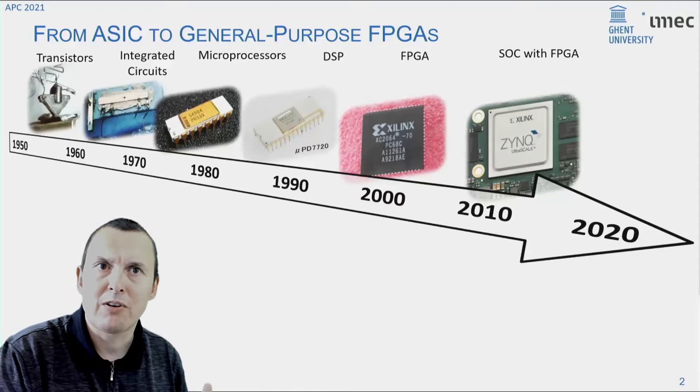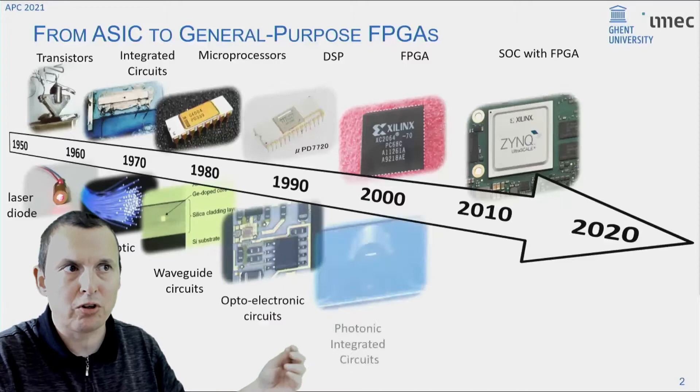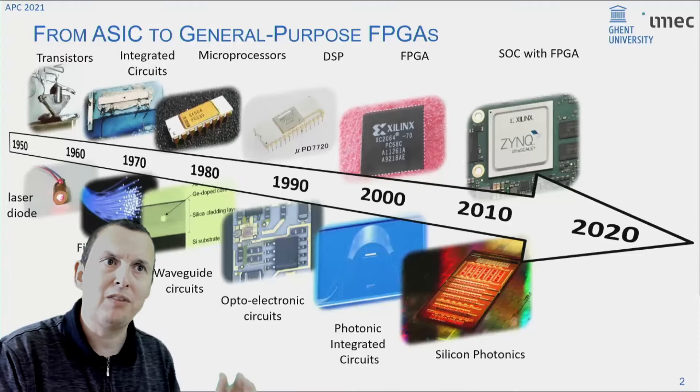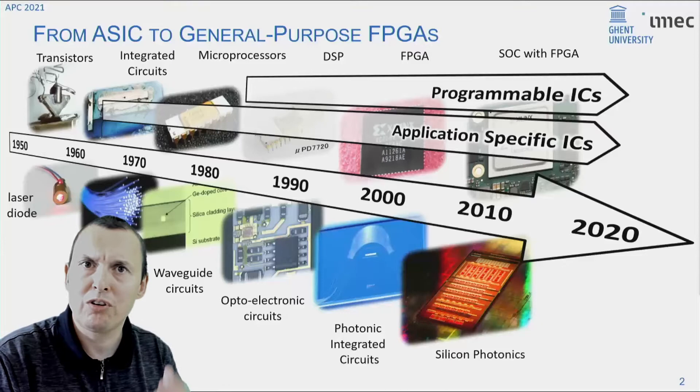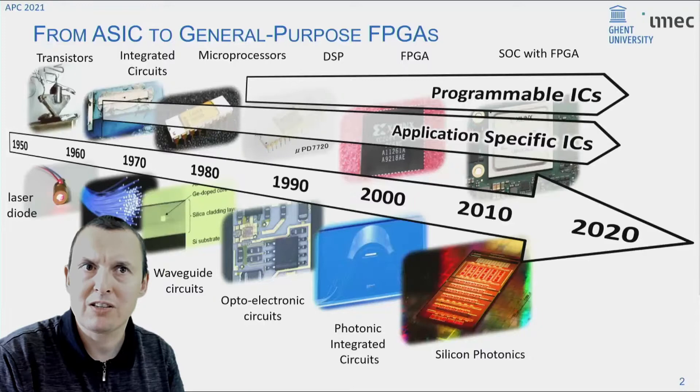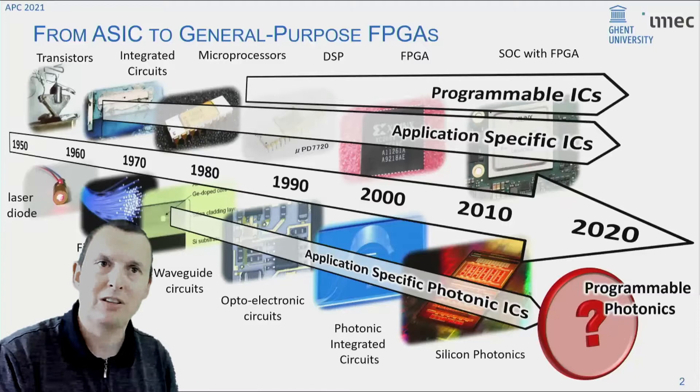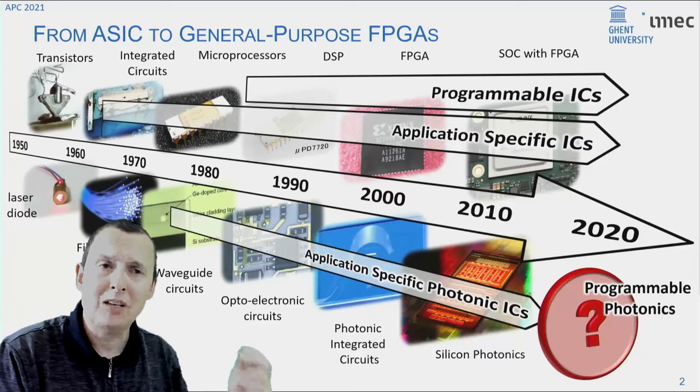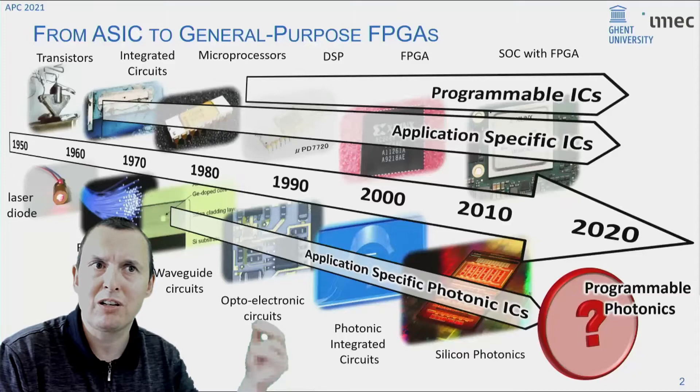Compare that to photonics, and indeed you see that with photonics we have also come a long way towards integrating multiple functions on a chip. But there's a very big difference. In electronics, already quite early on, we saw the emergence of really programmable general-purpose electronics, microcontrollers, FPGAs. In photonics, all these circuits that we see today are application-specific ICs designed for one particular application or function.